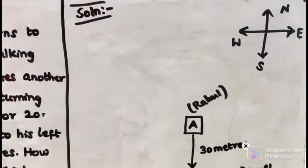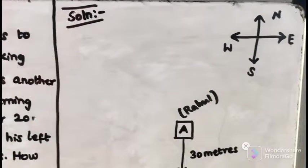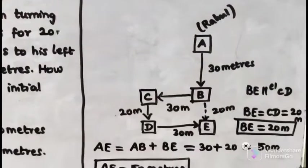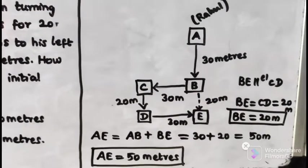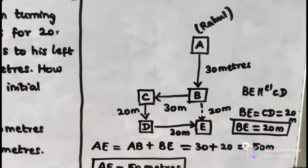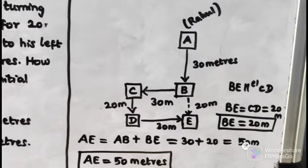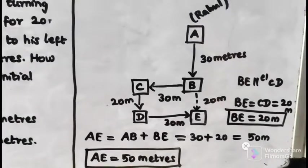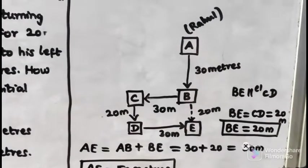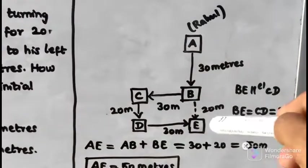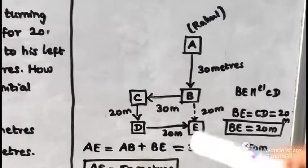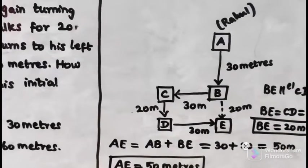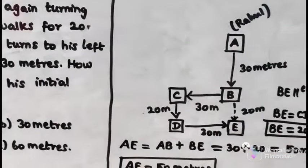First, draw the directions: North, East, South, West. Starting from point A, he walks 30 meters South to point B. Then right side turn going West 30 meters to point C.